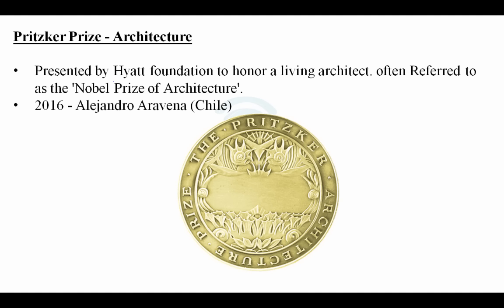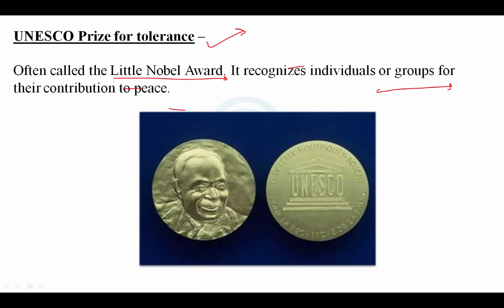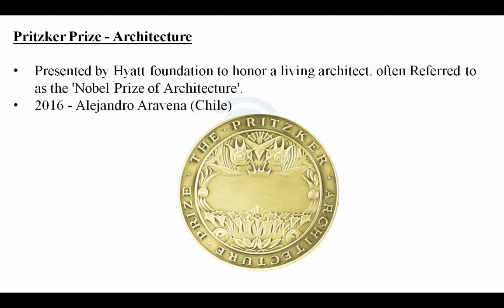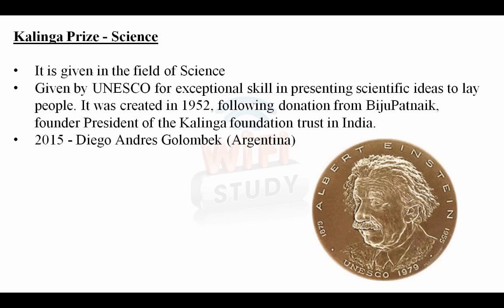Do not confuse the Pulitzer Prize with the Pritzker Prize. The Pulitzer is for journalism, literature, and music, while the Pritzker Prize is given only for architecture. It is known as the Nobel Prize of Architecture. The 2016 recipient was Alejandro Aravena from Chile.